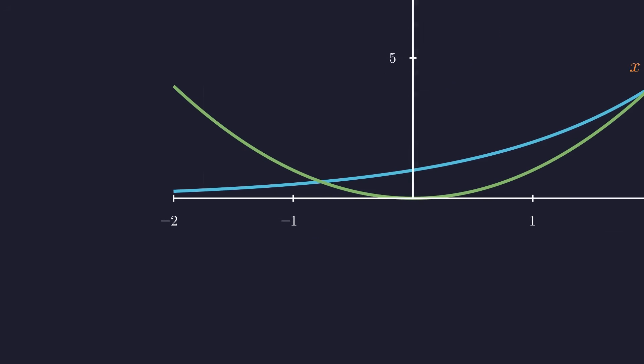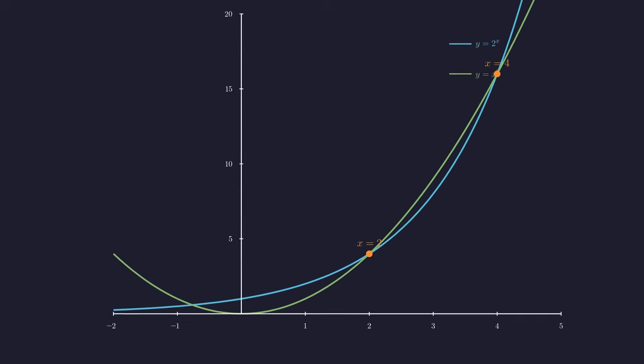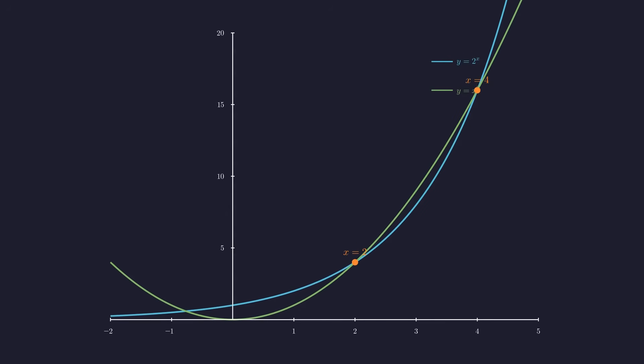If we zoom in on the left side of our graph, we can see hints of a third intersection point lurking in the negative territory. Finding this sneaky solution will require some more sophisticated mathematical tools. So our visual inspection suggests there are exactly three real solutions to hunt down. Now let's prove this rigorously and find them all.